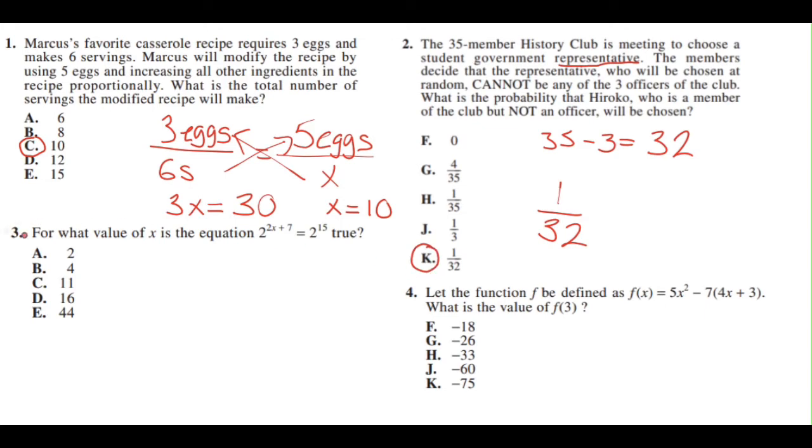Problem 3: For what value of x is the equation 2 to the power of 2x plus 7 equal to 2 to the power of 15 true? When we have an equation where the base is the same, we have to set the exponents equal to each other.